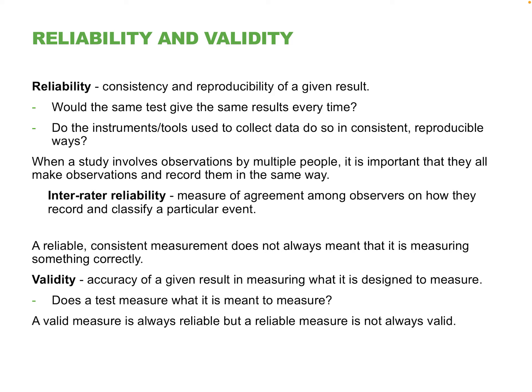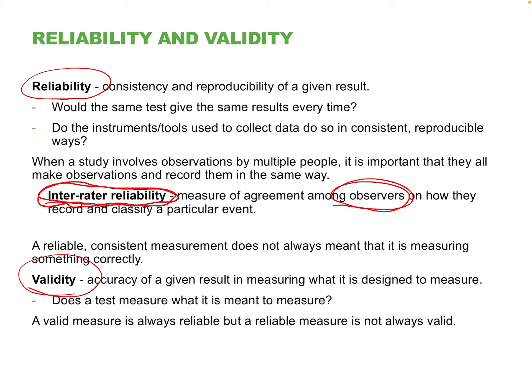Reliability means: are the results consistent over time? Would ginkgo work the same for people in Idaho, or five years from now? If a study involves observers rating children's aggressive behavior on a scale of one to ten, and you have three or four people rating the same child, are they going to come up with similar answers? That's called inter-rater reliability — it's important that all observers can classify events very similarly.